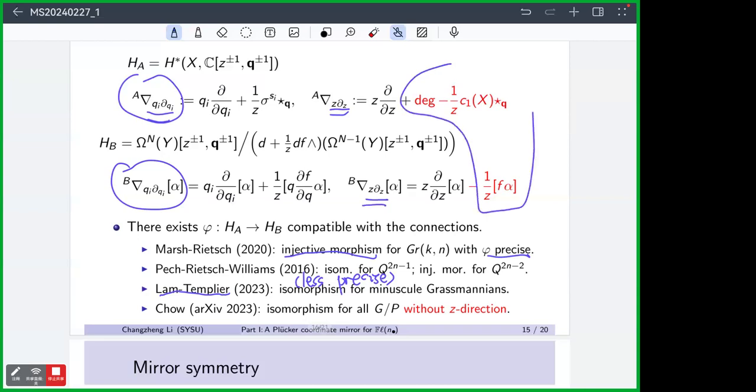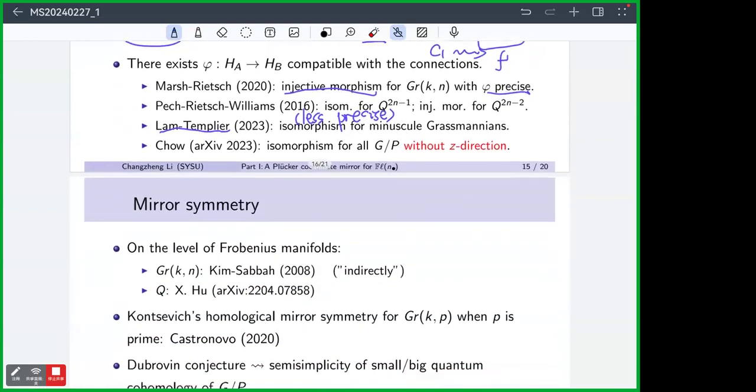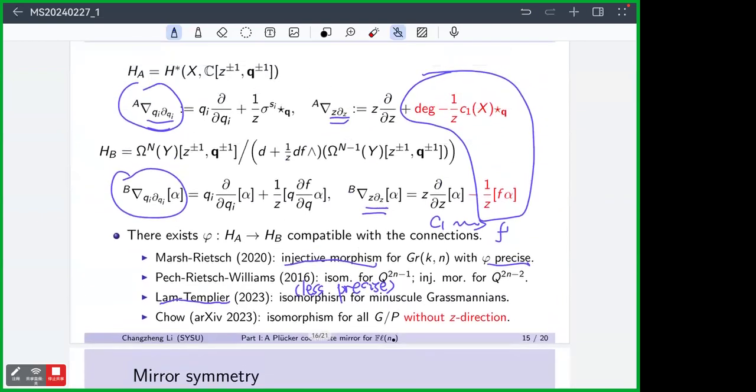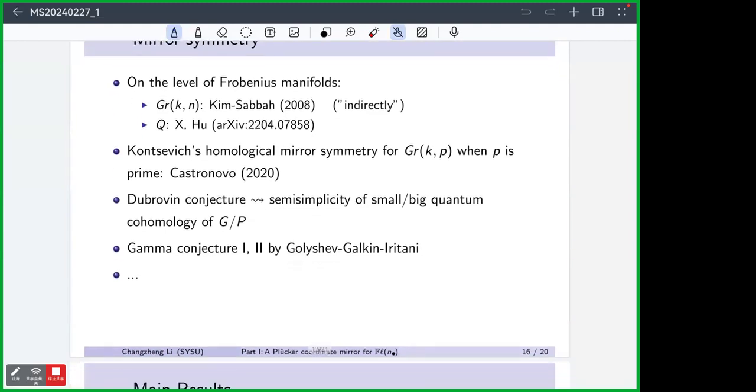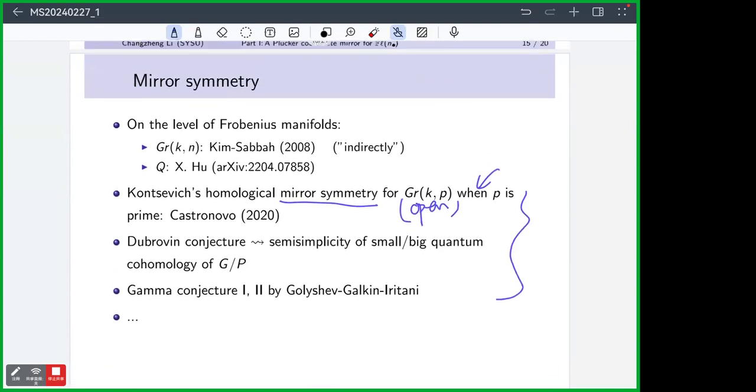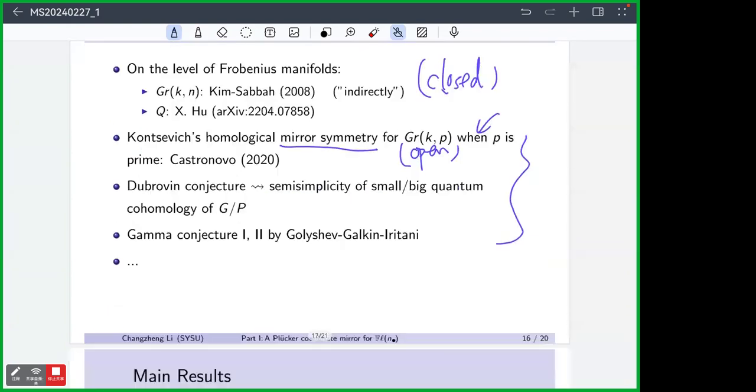Also, Rietsch showed that the critical points, so the regular function of Yp+ is isomorphic to the Jacobi ring of the superpotential. So, if we combine these two, then we obtain this. This is the mirror symmetry. This is the A side. This is the B side. And this is some story on some higher level. On the level D module, two weeks ago, last month, Chi Hong Chow gave another talk on D module mirror symmetry for flag variety. You may check the records. It's about the isomorphism of quantum D module which is compatible with the quantum connection on the A side and the quantum connection on the B side.